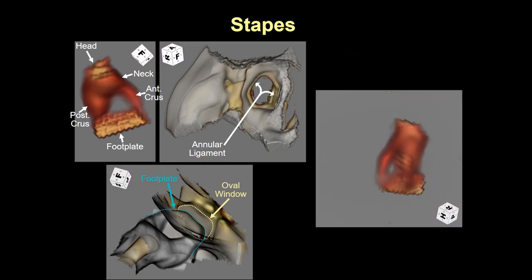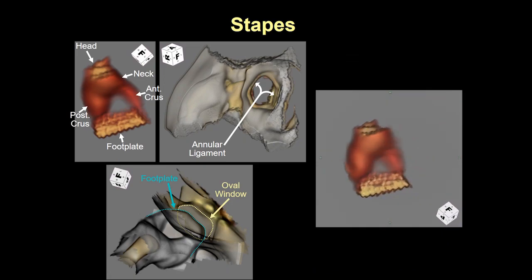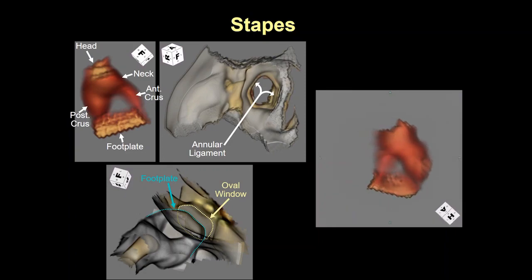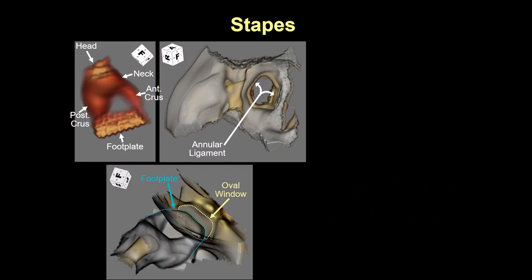The stapes is shaped like a stirrup and demonstrates a head that articulates with the lenticular process of incus, two crura of which the anterior crus is thinner than the posterior crus, and a footplate that sits on the oval window attached to its margins by the annular ligament. Note that the color rendering for the stapes is different than that of the malleus and incus because it has a different embryological origin and is more cartilaginous, less bony than the malleus and incus.